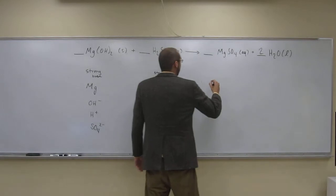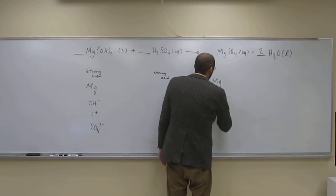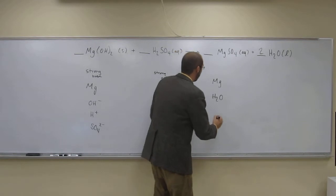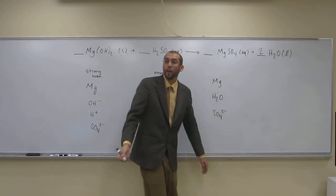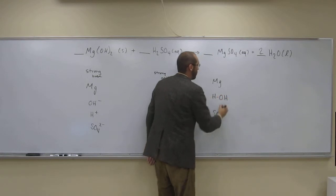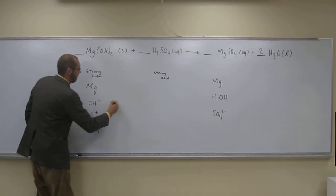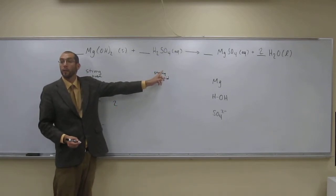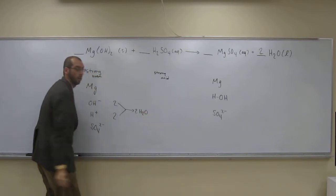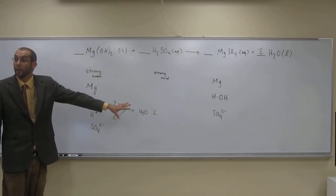So let's just go about writing what we have over here. So we've got magnesium, and I'm going to put H2O like that for the water, because we're going to eventually combine these two. And then we have the SO4 2 minus, like that. I guess we could look at it as HOH, like that. That might be easier to see. So how many OHs did we say we had? Two. And how many Hs from the strong acid? Two.